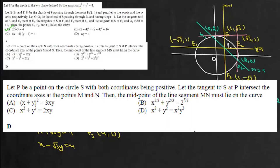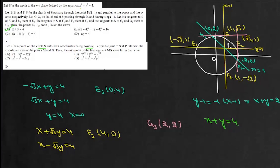For the second part: let P be a point on circle S with both coordinates positive. The tangent to S at P intersects the coordinate axes at points M and N. We need to find the locus of the midpoint of segment MN. We take P in parametric form as (2cosθ, 2sinθ).